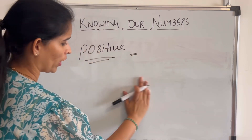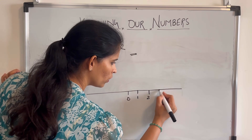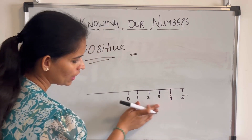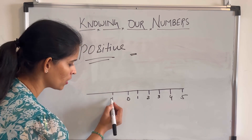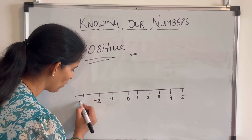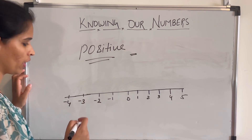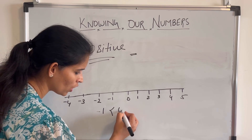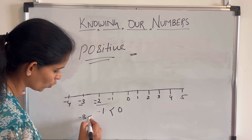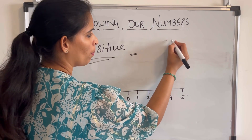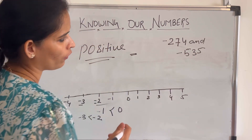I'll explain positive and negative numbers using a number line. On the number line, starting from zero: 1, 2, 3, 4, 5 going to the right are positive numbers. Going in the opposite direction: -1, -2, -3, -4 are negative numbers, which are smaller than zero. Also, -3 is smaller than -2. If I ask you which is smaller — minus 274 or minus 535 — we check the number.